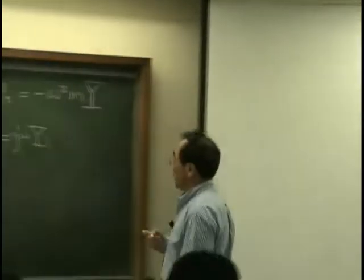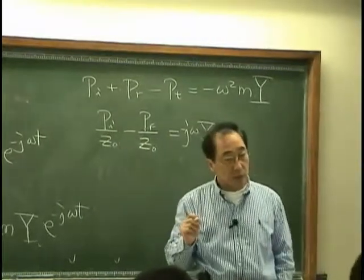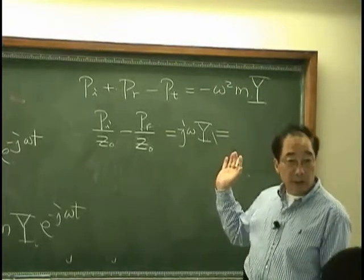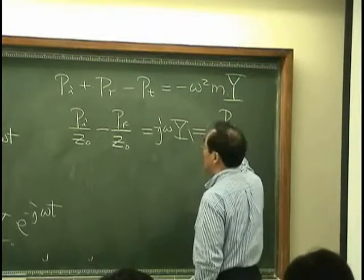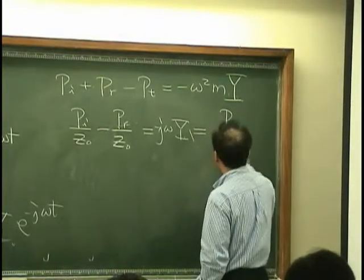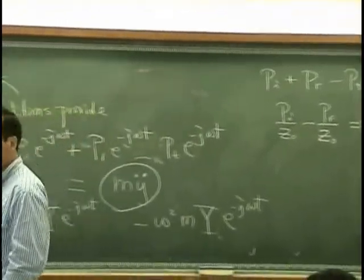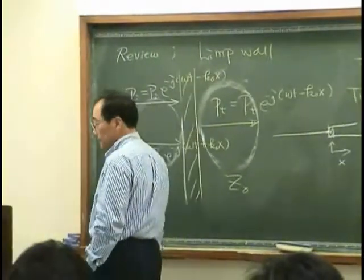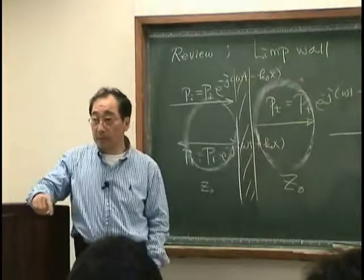Because this is the displacement. And the velocity is the rate of change of displacement with respect to time. So, minus j omega y is the amplitude of velocity. Right, Yucheng? You follow me, right? Okay. And this is same, has to be same as the velocity of the fluid particle on the right-hand side. And that is what? PT divided by Z0. So, okay. Okay. Okay.